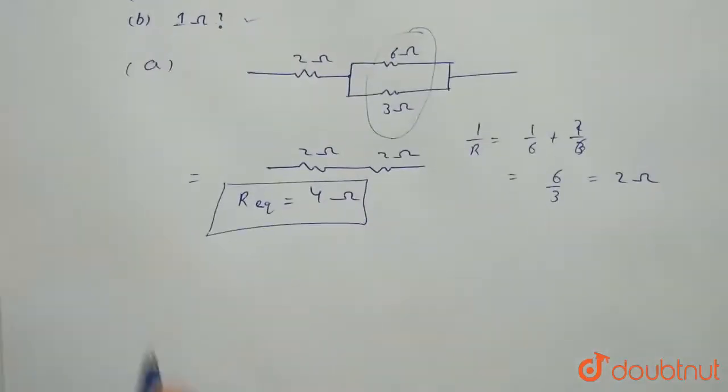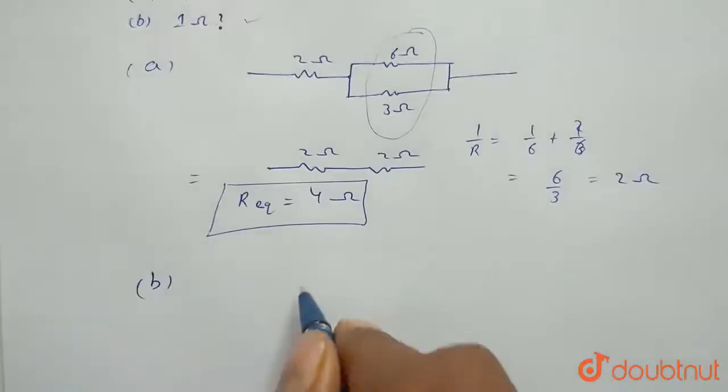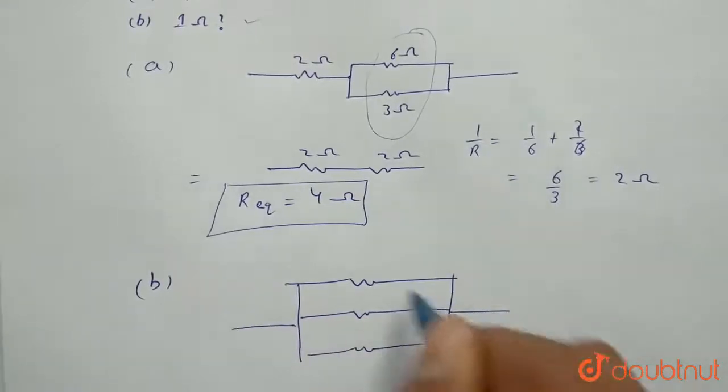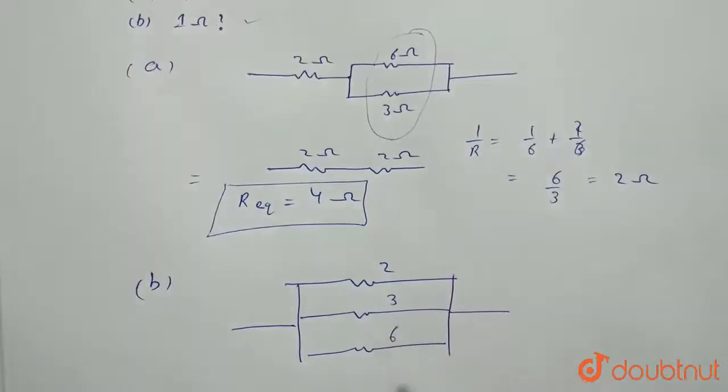And now if we connect all the resistances in parallel, that is 2 ohm, 3 ohm and 6 ohm.